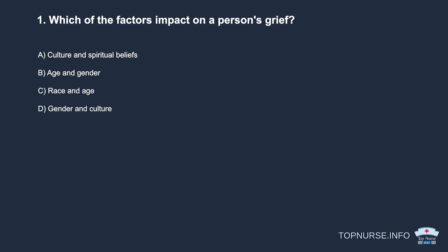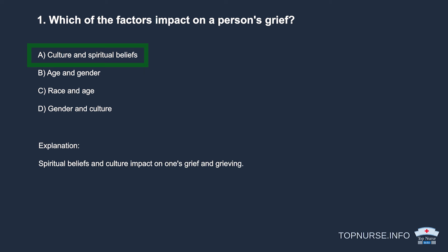Question 1: Which of the following factors impact a person's grief? a. Culture and spiritual beliefs. b. Age and gender. c. Race and age. d. Gender and culture. Correct answer: a. Culture and spiritual beliefs. Spiritual beliefs and culture impact one's grief and grieving.